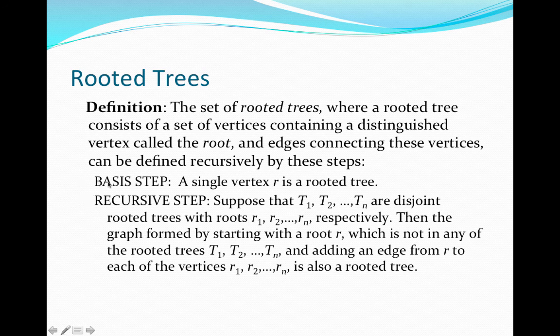The basis step is simply that a single vertex R is a rooted tree. The recursive step tells us that if we have any finite collection of disjoint or different rooted trees denoted by capital T1, T2, and Tn, they're rooted trees so they each have corresponding roots R1, R2, and Rn, respectively.